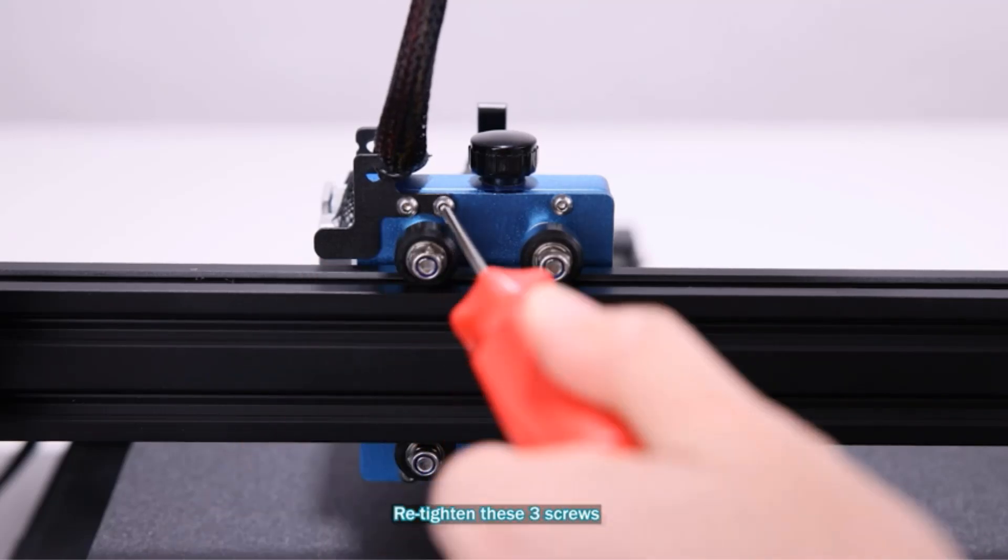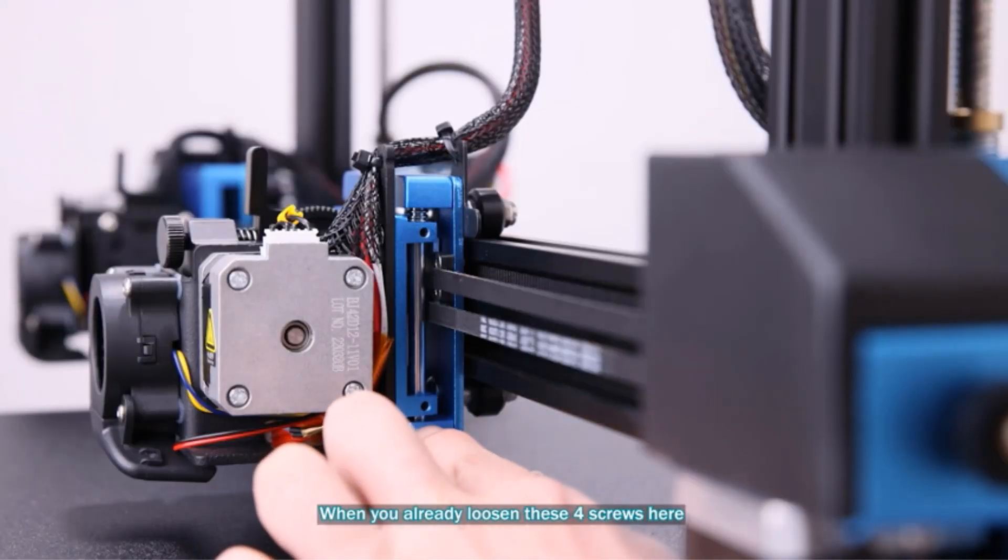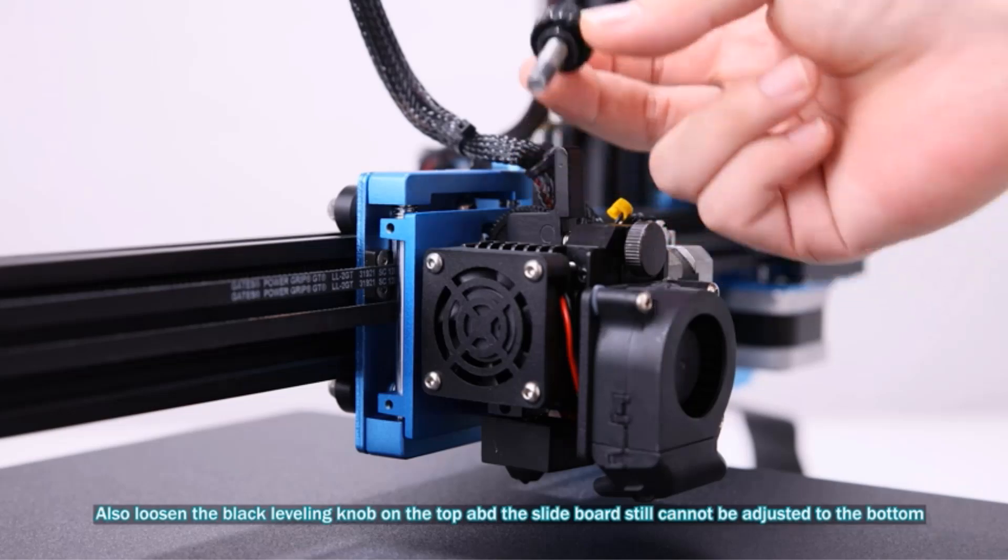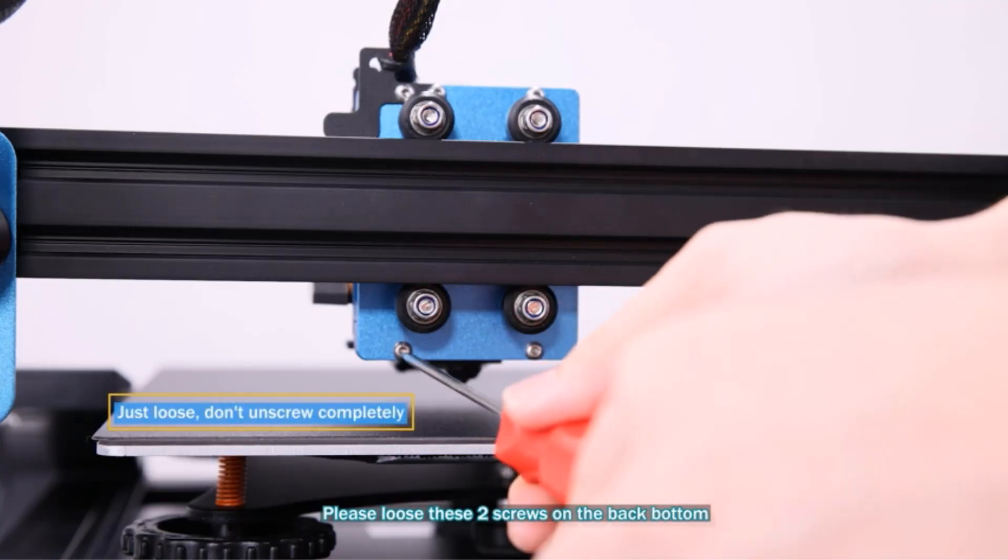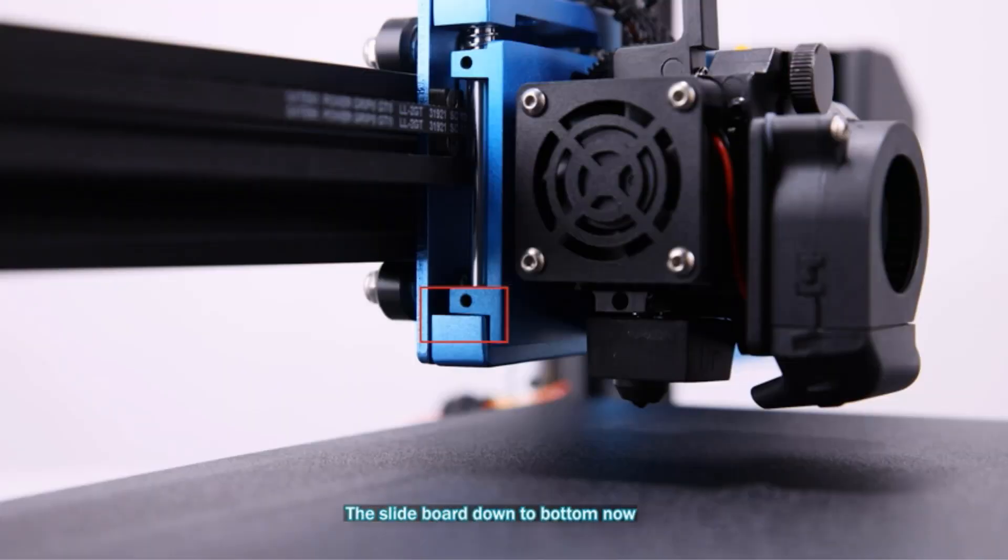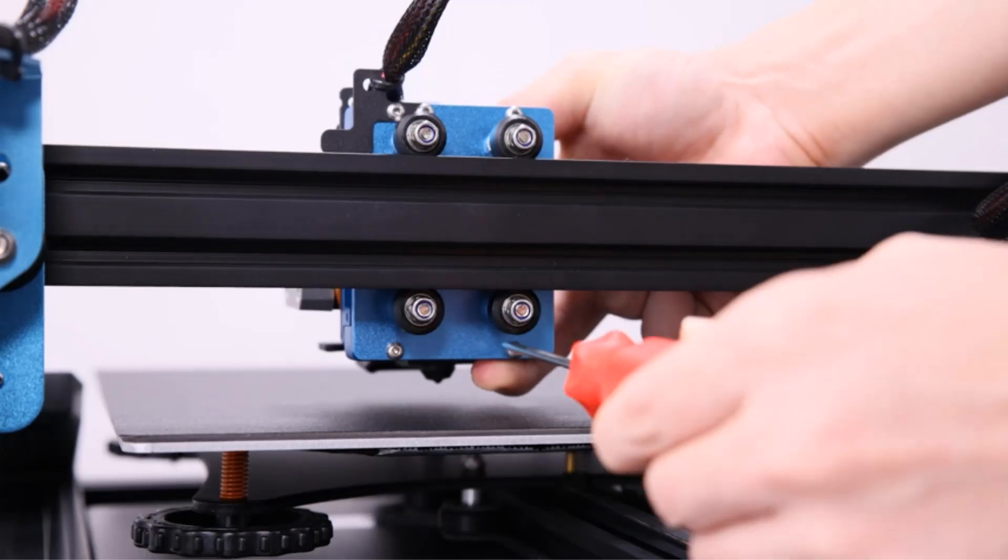The printer also comes with a 32-bit TMC-2209 silent board for stability and quiet operation. Additionally, it features a flexible spring steel plate for easy print removal and a 500W power supply for stable performance and protection against power surges. For more information, users are advised to refer to the official website of Sovel for the latest firmware updates and user guides.